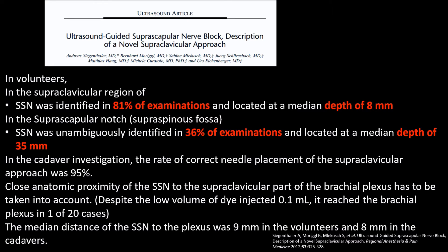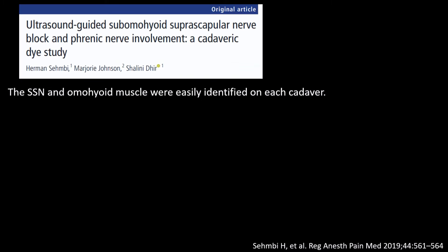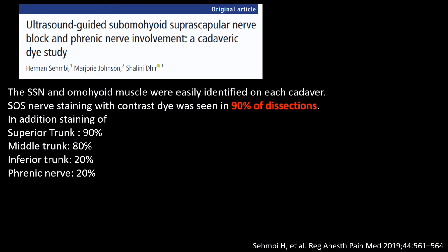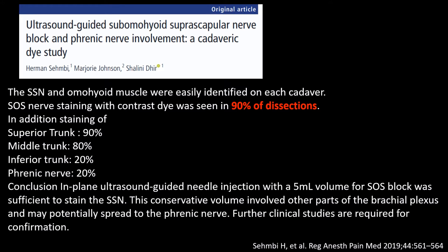The median distance from the suprascapular nerve to the brachial plexus was approximately nine millimeters in volunteers and eight millimeters in cadavers. In a cadaveric study of the anterior sub-omohyoid approach by Sahambi et al., the suprascapular nerve was stained in 90 percent of dissections after injection of five milliliters of dye. However, a high proportion of the brachial plexus also got stained: the superior trunk in 90 percent, middle trunk in 80 percent, and inferior trunk in 20 percent. The phrenic nerve was stained in 20 percent of cases, suggesting that further studies are needed to identify optimal volume and phrenic nerve block risk.